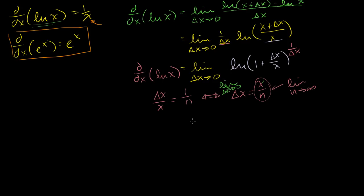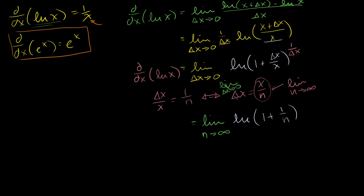So let's make that substitution. All of this is going to be equal to the limit as n approaches infinity of the natural log of 1 plus — now instead of delta x over x, I substituted 1 over n — so that's 1 plus 1 over n. And what's 1 over delta x? Well, delta x equals x over n, so 1 over delta x is going to be n over x.